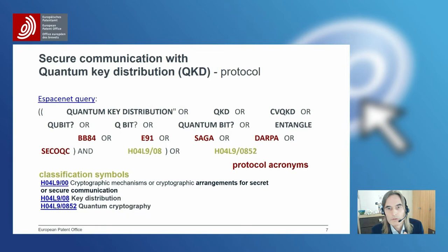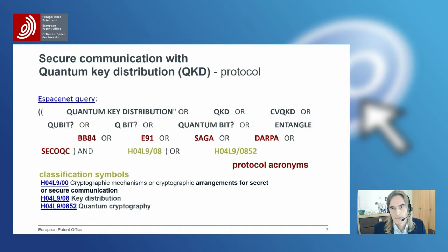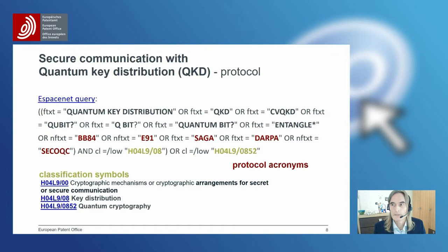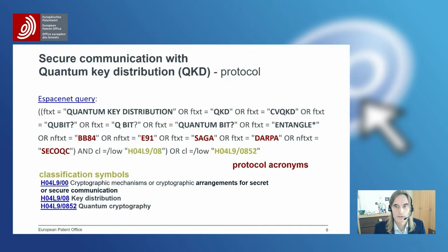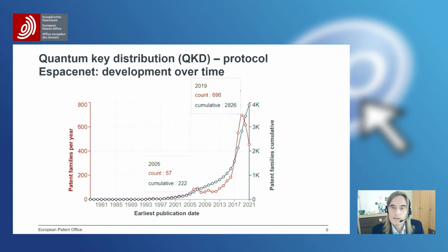We see the Boolean combinations: we combine the keywords with the more general classification, or we take all documents from the specific quantum cryptography classification. When Espacenet returns results, it shows the fields we searched — here mostly full text, and the specific classification codes. CL stands for classification codes, IPC or CPC codes. With this search, we get a bit more than 4000 documents.